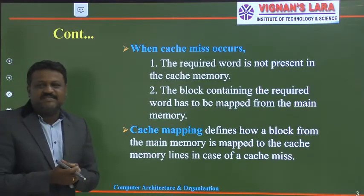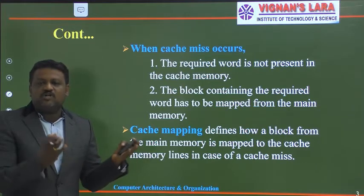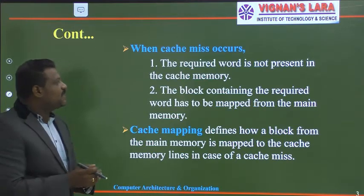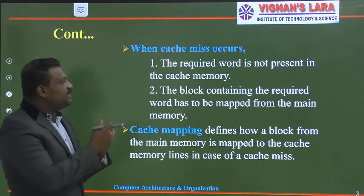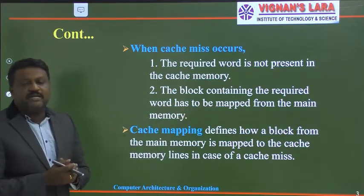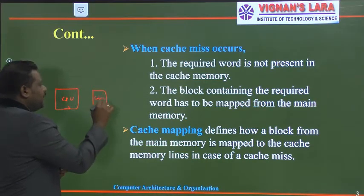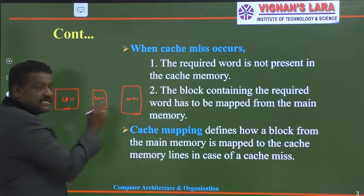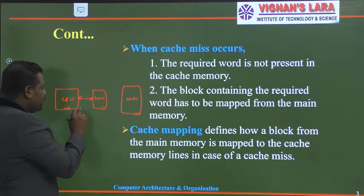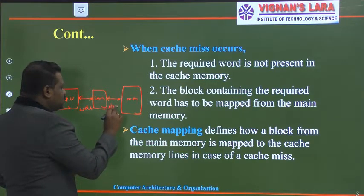Cache miss means if the required information is not available in the cache memory. When cache miss occurs, the required word is not present in the cache. The block containing the required word has to be mapped from the main memory. Information transfer between cache memory and CPU is done in terms of words, and information transfer between main memory and cache memory is done in terms of blocks.